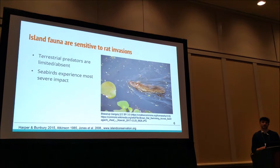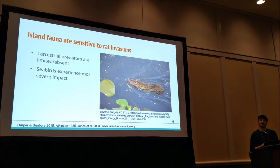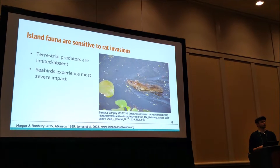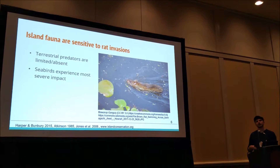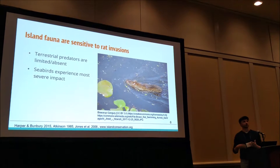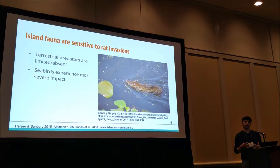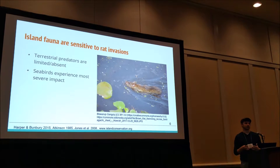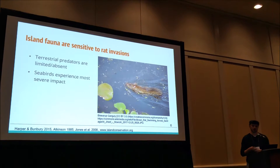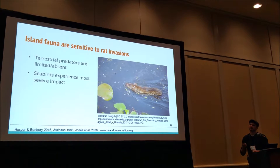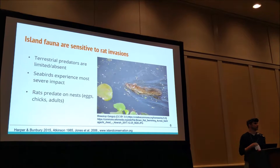Of all groups of animals, seabirds are the most impacted. This is largely due to their pelagic feeding strategy, where they'll leave their nests to go feed in the open ocean. A lot of them are terrestrial nesting species, again with that absence of a terrestrial predator. And what this does is it leaves their nests open for rat predation.